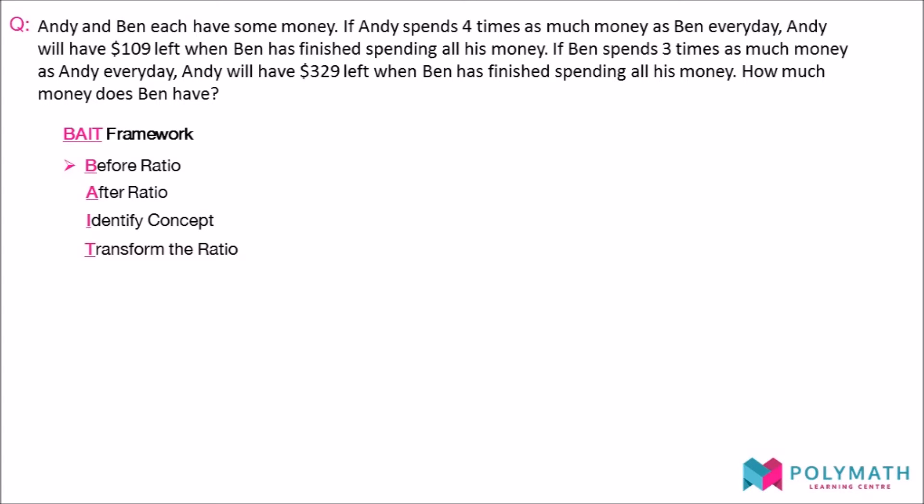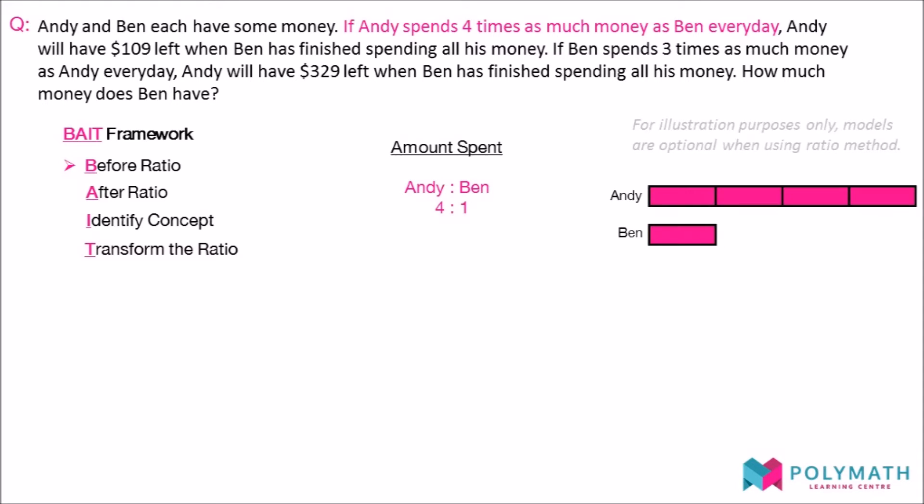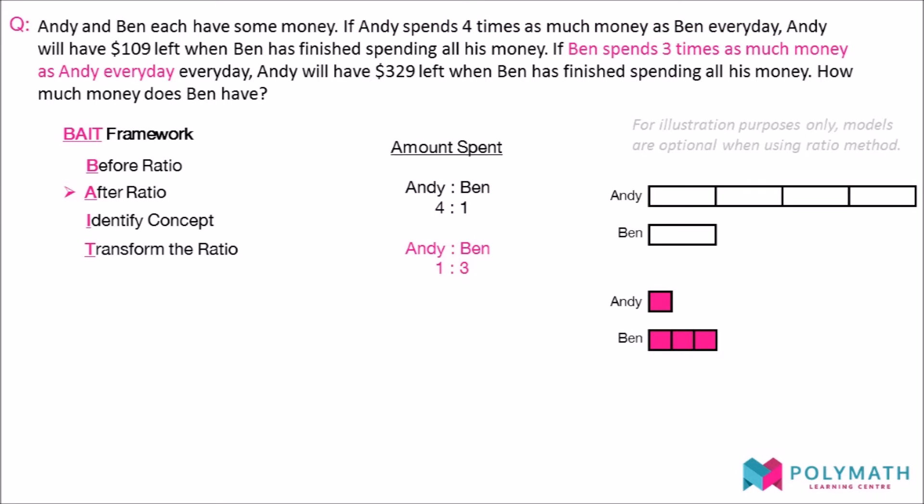After reading the question, students are encouraged to first express any proportion in the question in ratio format. In the first scenario, if Andy spends four times as much money as Ben every day, the ratio of the total amount Andy would have spent to the total amount Ben would have spent is 4:1. In the second scenario, since Ben spends three times as much money as Andy every day, the ratio of the amount Andy would have spent to the amount Ben would have spent will be 1:3.